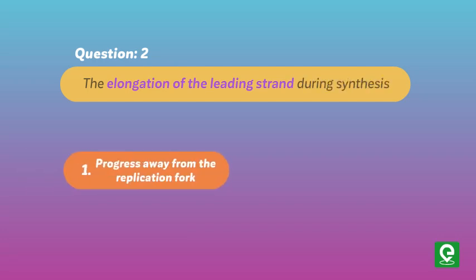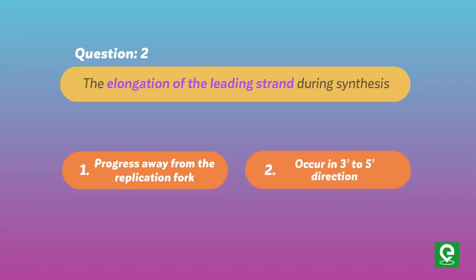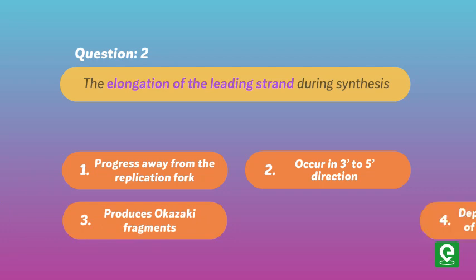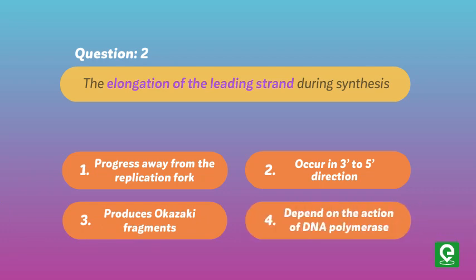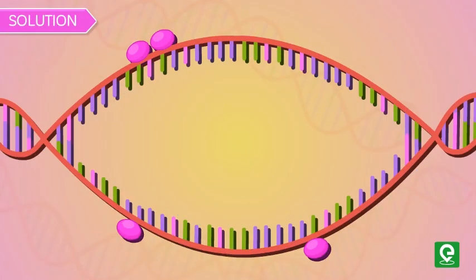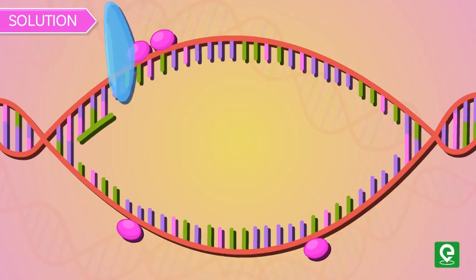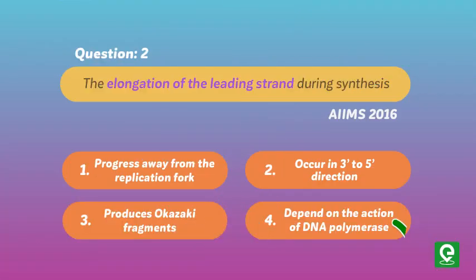Question 2 (AIIMS 2016): The elongation of the leading strand during DNA synthesis — (1) progresses away from the replication fork, (2) occurs in 3' to 5' direction, (3) produces Okazaki fragments, (4) depends on the action of DNA polymerase. Solution: The elongation of the leading strand depends on the action of DNA polymerase. Hence, option 4 is correct.